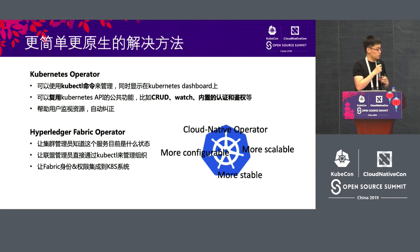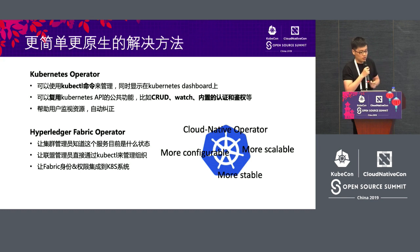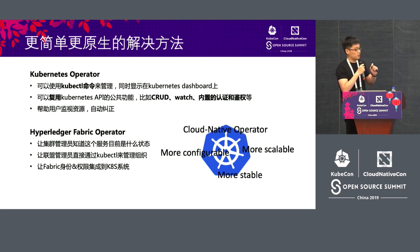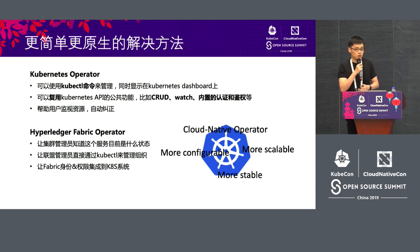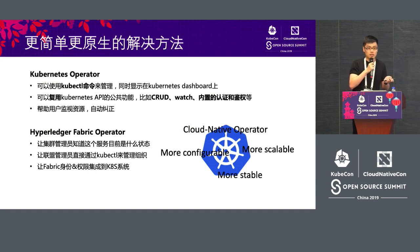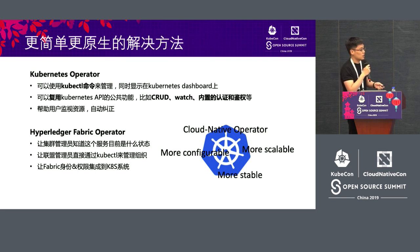If you have a Fabric Operator, what benefits can we get? First, for cluster administrators, if they have the Fabric Operator they can check what resources belong to which fabric organization and also judge the status of the fabric organization. The second benefit is for consortium administrators — via command lines they can realize the configurations of the organization via kubectl. The third benefit is that we have integrated the fabric identity and authority into the Kubernetes system.